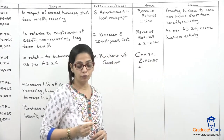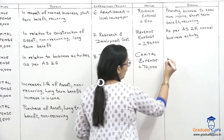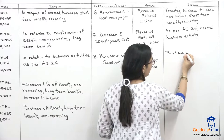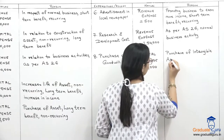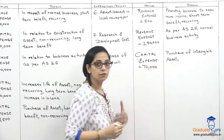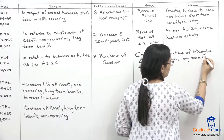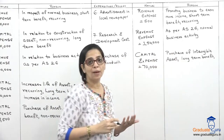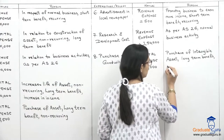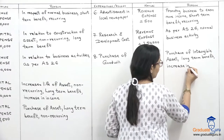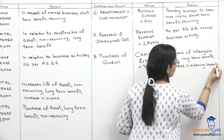Capital expense of 70,000. Why? It is purchase of an intangible asset, it gives long-term benefit, and it also increases our earning capacity — by purchasing someone else's goodwill and attaching their name to ours, we will be able to earn more. That is why it is capital.